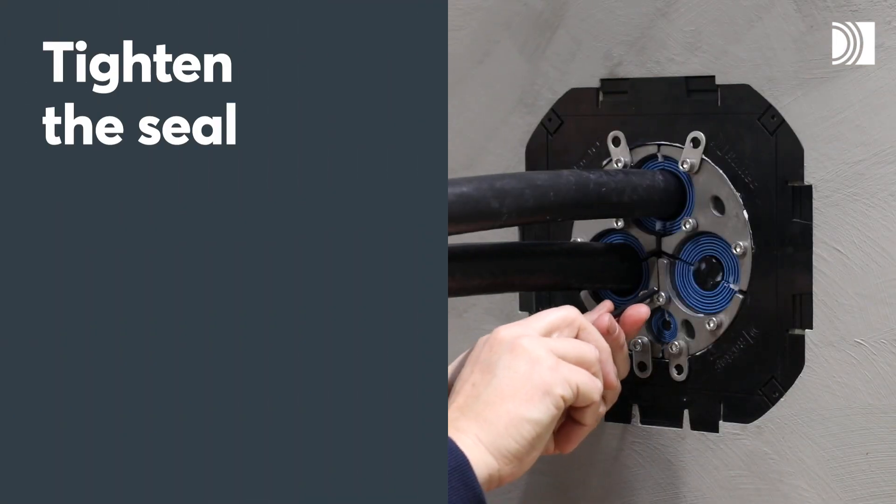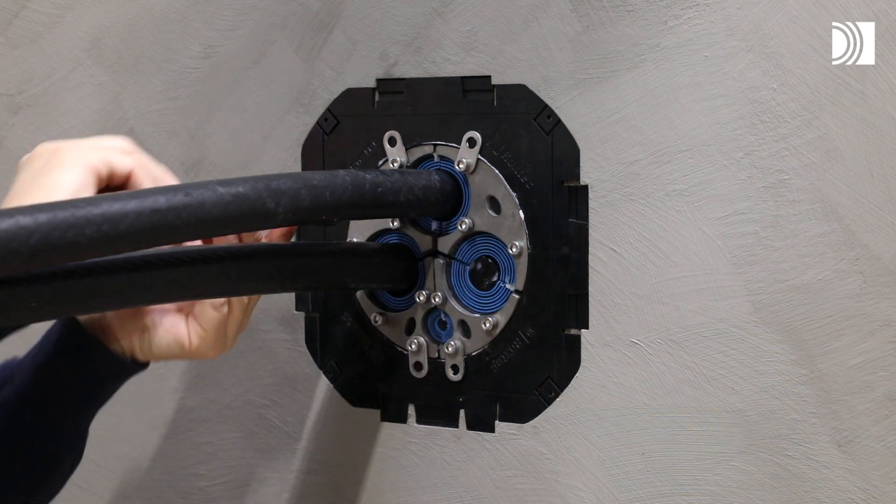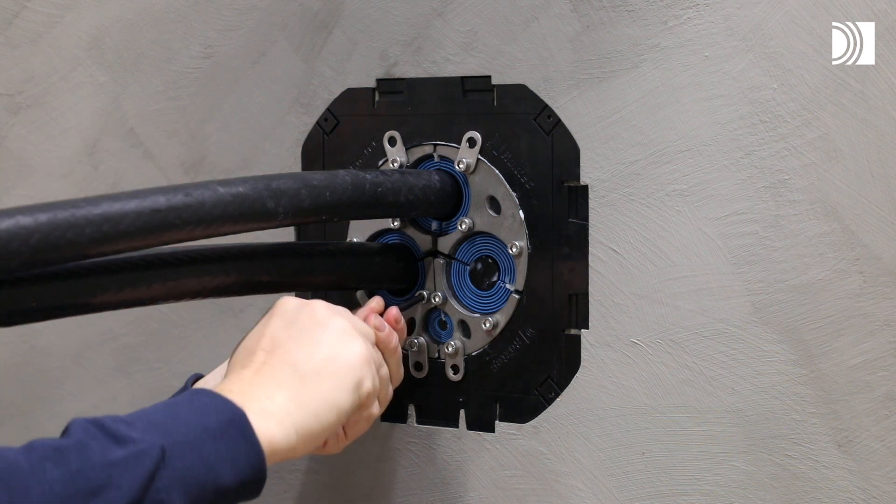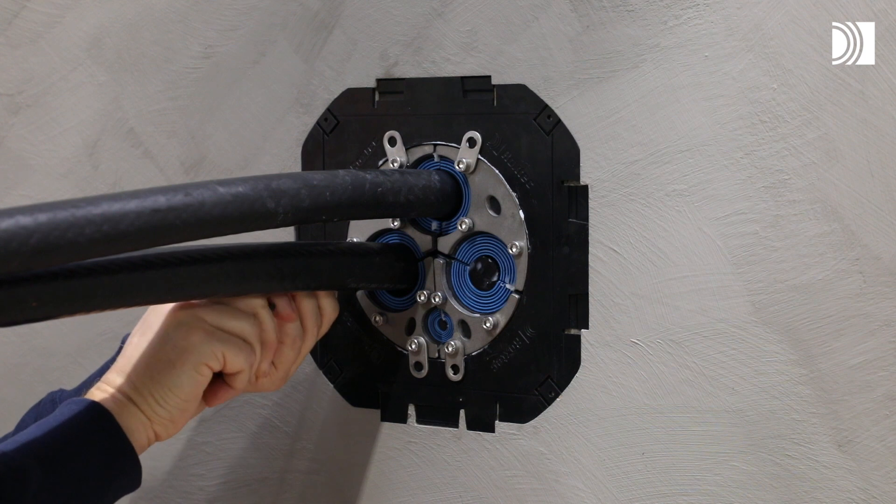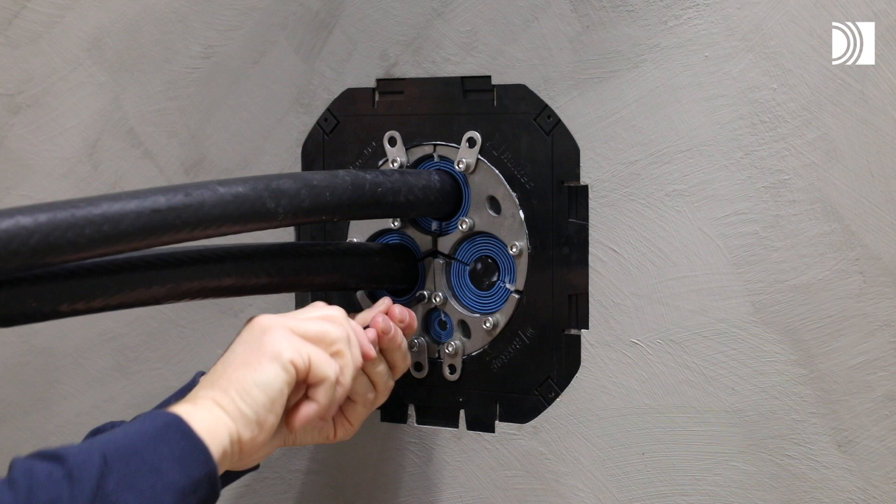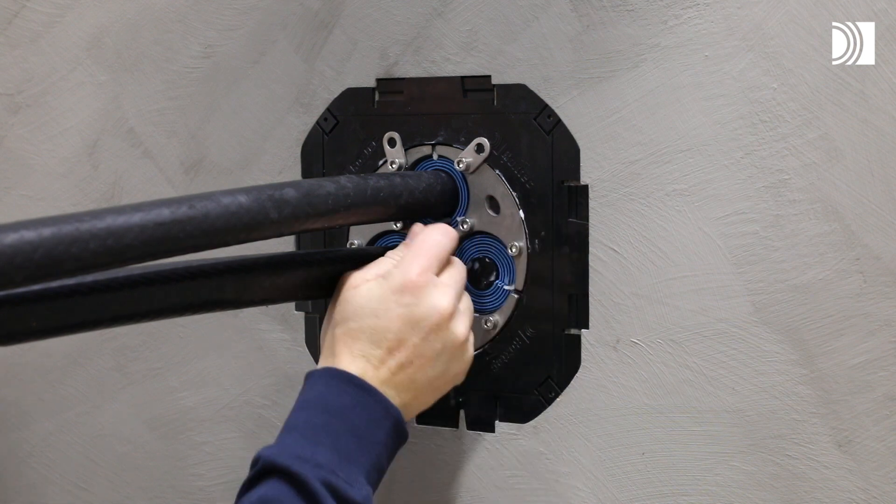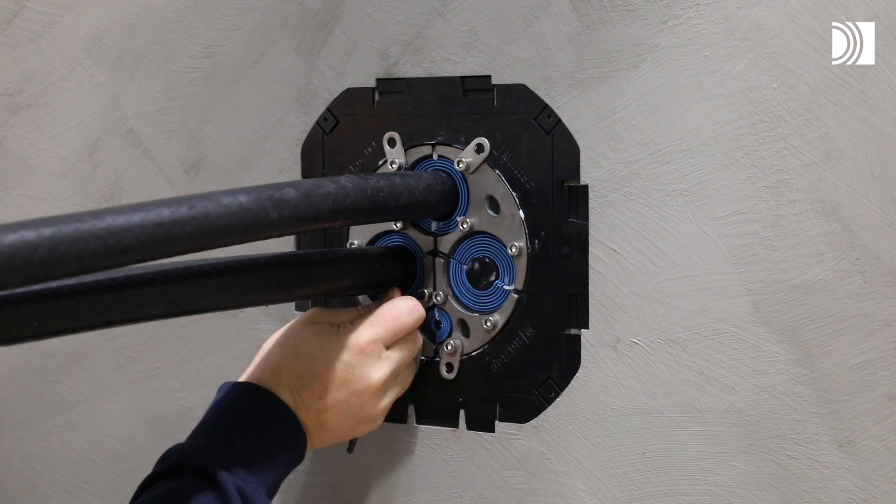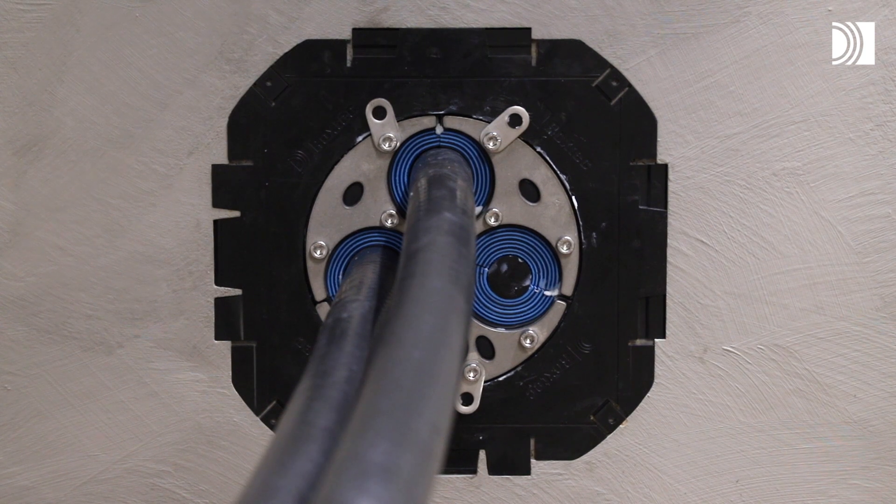Tighten the seal. Tighten the inner screws partially. Tighten the outer screws partially and then continue with the inner screws. Fully tighten the screws crosswise in small steps. Bulging rubber and visible protruding lubricant indicate a tight seal.